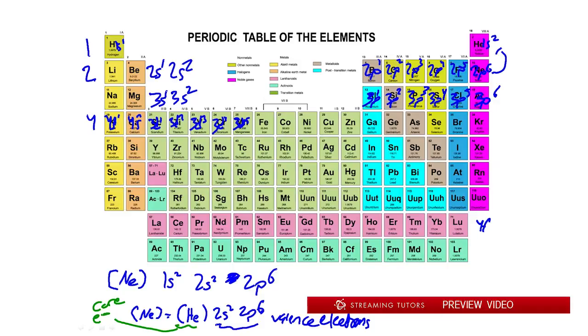Down here once we get to the lanthanides we'd have, this is group 6, 6s1, 6s2. We'd go down here, we have 4f1, 4f2, and so on and so forth up to 14. So you see it's just a very simple and straightforward kind of counting method going on.